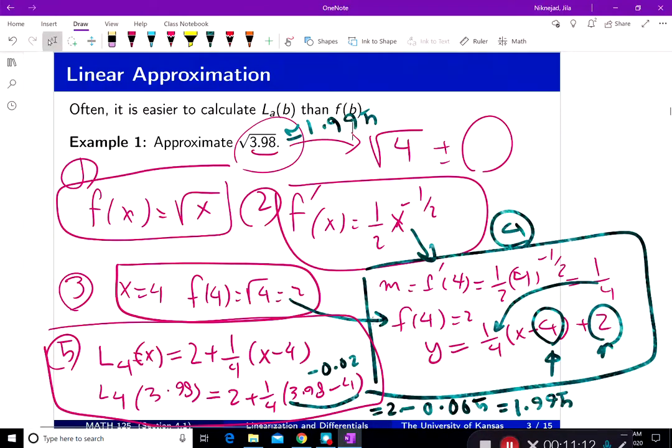And again, the reason we were allowed to approximate at 4 was that 4 is your A here. This one is your A. B is very close. 3.98 is very close to A.